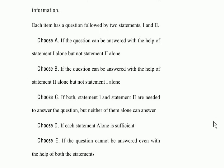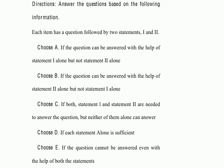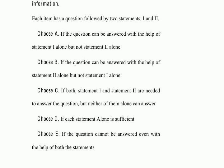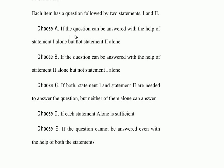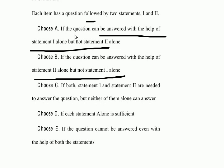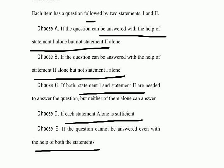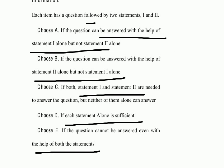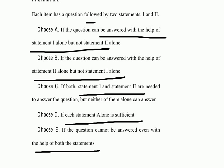Let's look at a couple of examples, but before we do that, here are the instructions. You get five choices. Choose A if the question can be answered with statement one alone but not statement two. Choice B is where statement two alone is sufficient but not statement one. Choice C is when you need both statements. Choice D is when each alone is sufficient. Choice E is when the question cannot be answered even with both statements. It's important to know which choice represents what answer, because after cracking a difficult question you don't want to choose the wrong letter.